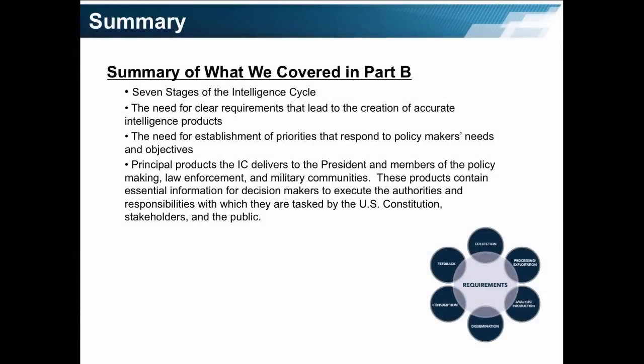What did we cover in Part B? We covered the seven stages of the intelligence cycle, the need for clear requirements that lead to the creation of accurate intelligence products, the need for the establishment of priorities that respond to policymakers' needs and objectives, and the principal products that the IC delivers to the President and members of the policymaking, law enforcement, and military communities. These products contain essential information for decision makers to execute the authorities and responsibilities with which they are tasked by the U.S. Constitution, stakeholders, and the public. Thank you for attending the lecture. I hope it was useful. I will see you again in Unit 2. Good luck in your studies.